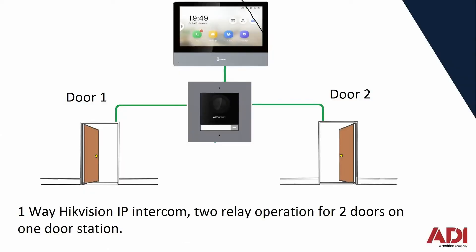The system is already set up in IVMS and it's a working system. All we're going to do now is enable relay 1 and relay 2, so when you receive a call on your handset you can select one or two. For example, an application where you have a vehicle gate and adjacent to it a pedestrian gate — you can select which gate you're going to open.